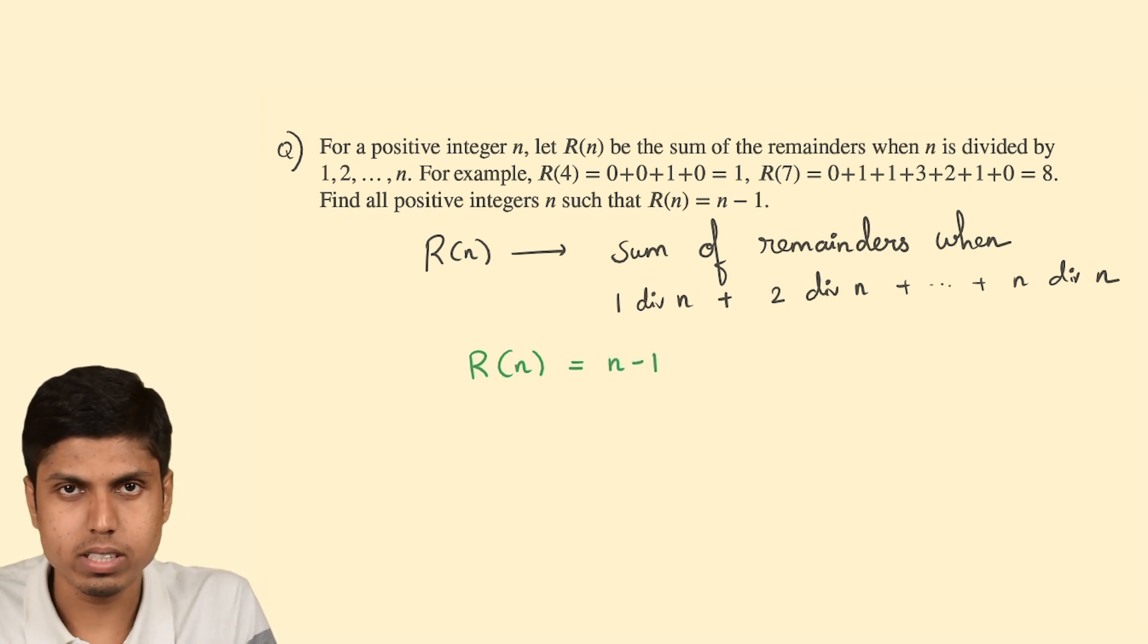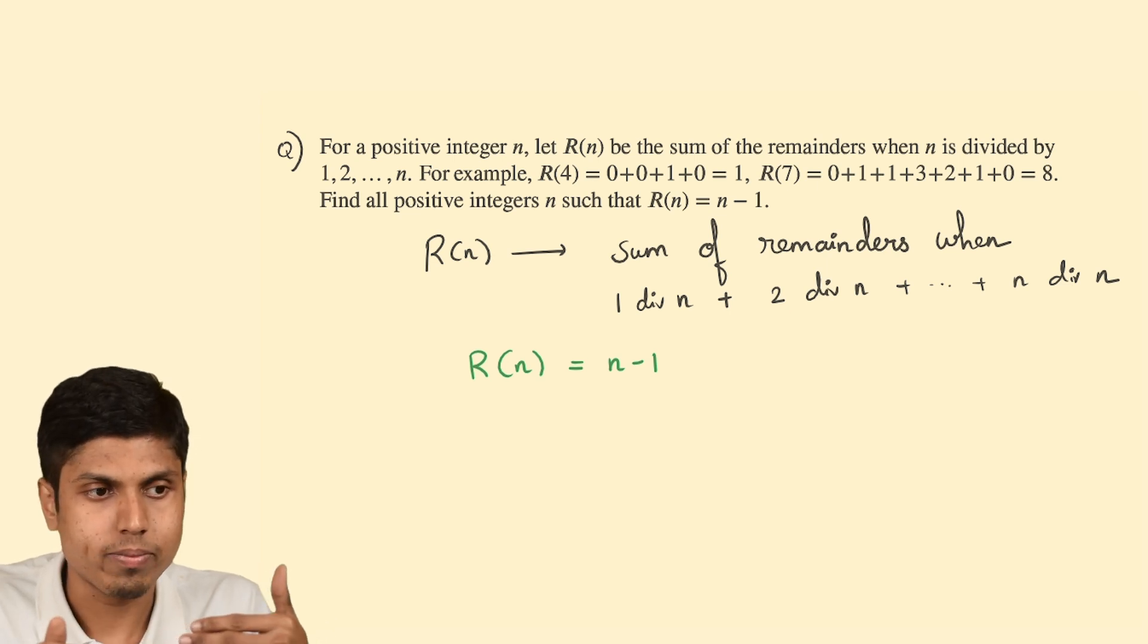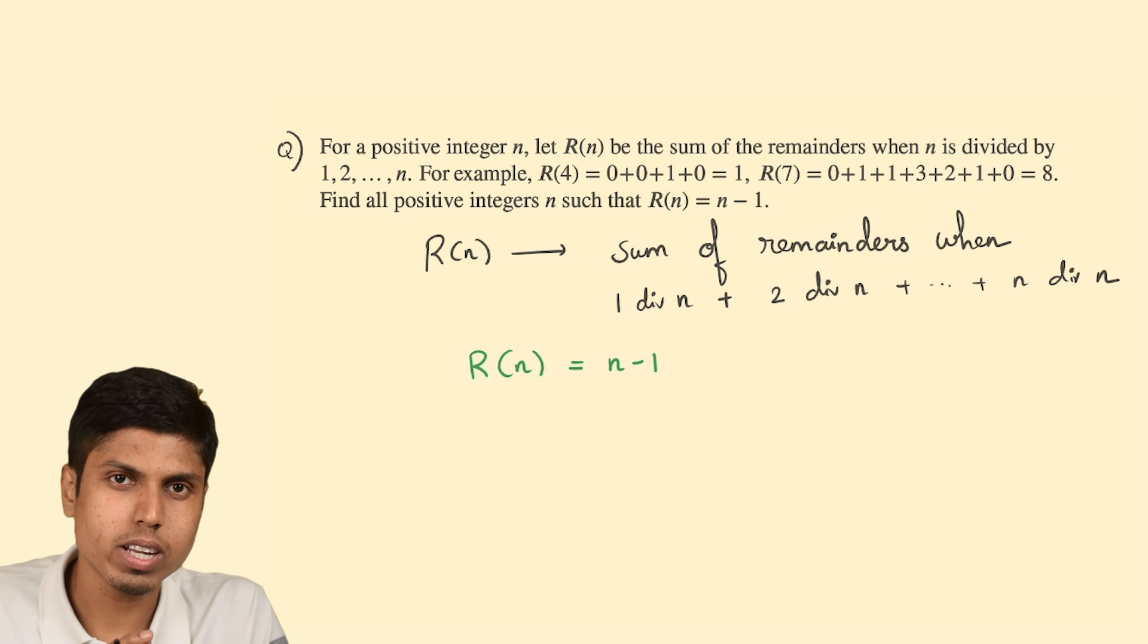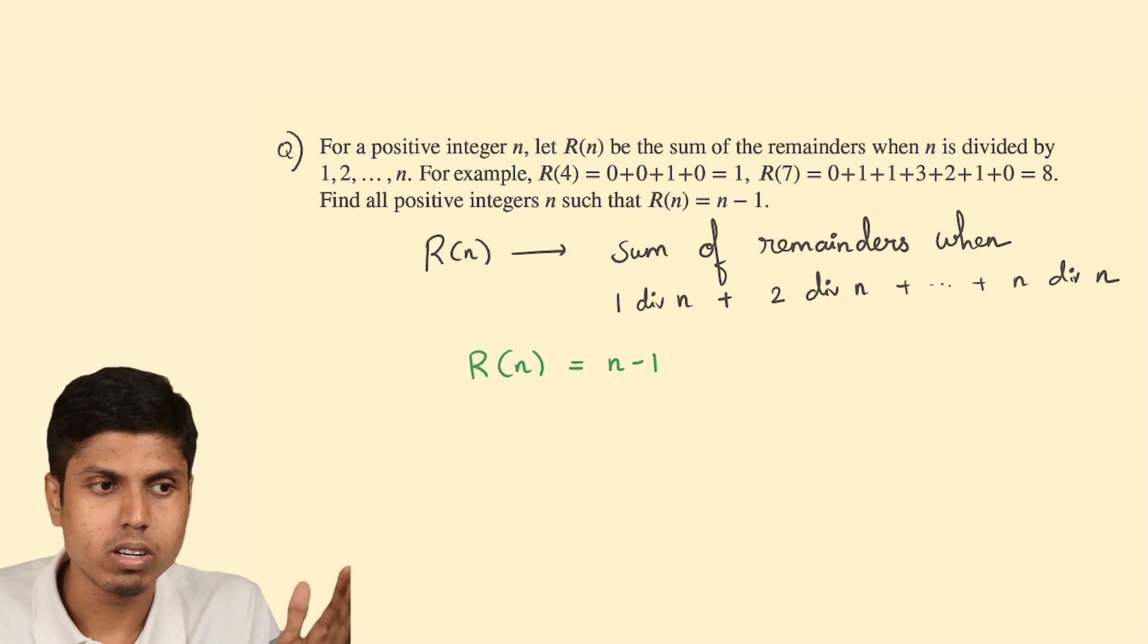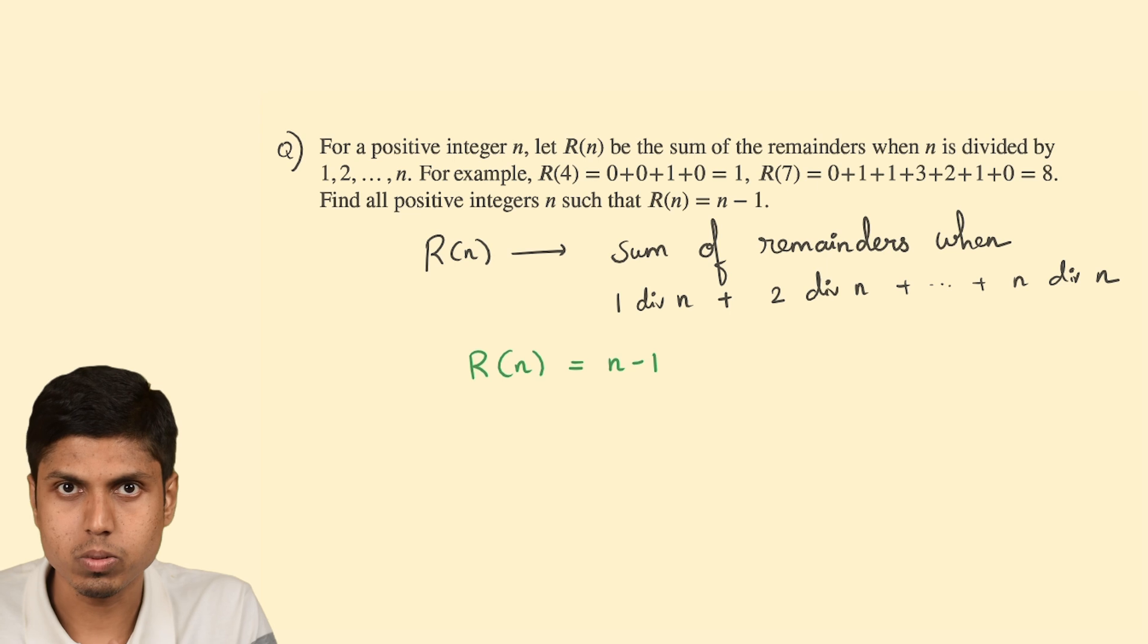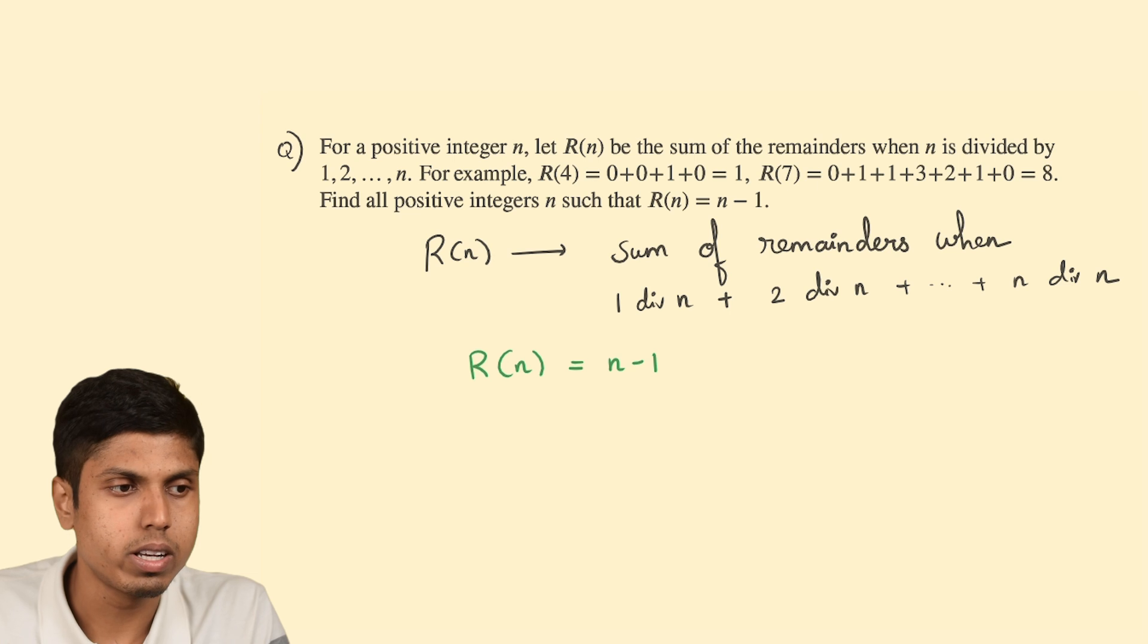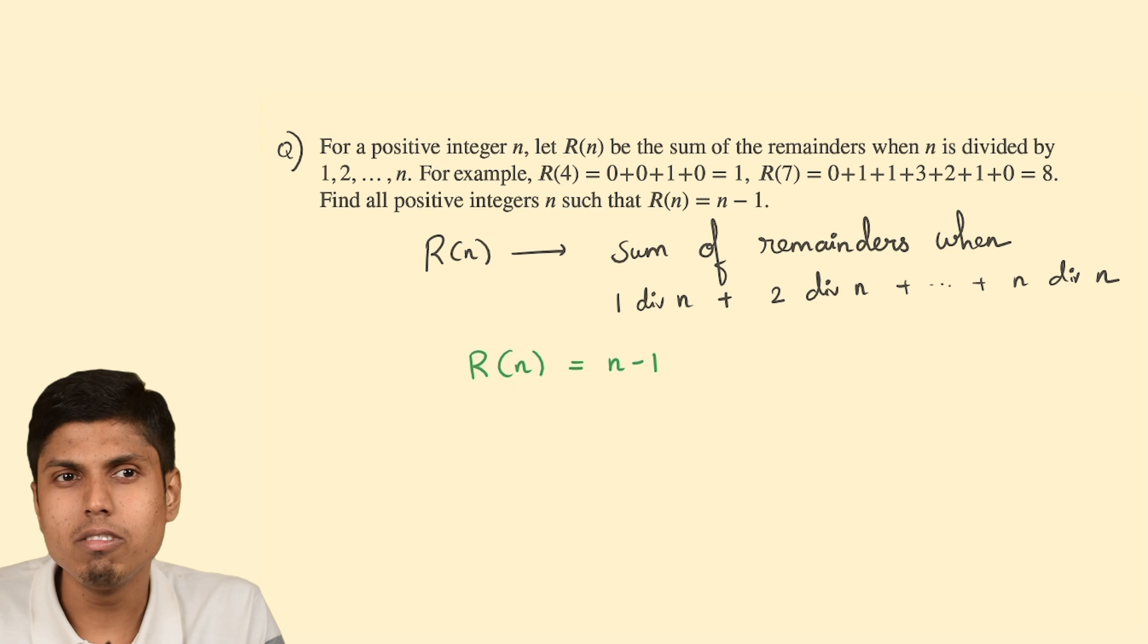As you see this question, do not try to attempt with known formulas and so on. Do not go into the usual conventional pathway. You first have to question yourself: is the value of R(n) going really large when compared to n minus 1, or quite small when compared to n minus 1 as you increase the value of n? Once you ask this question to yourself, you will try to think in the correct direction. Your initial path will be close to the solution at least, if not exact.